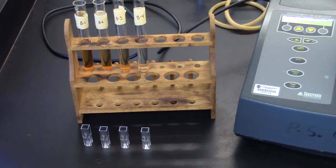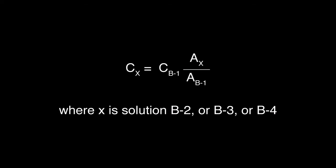Beer's law may be used to determine the concentration of the iron-thiocyanate complex at the equilibrium as follows. The concentration of X equals the concentration of B1 times the absorbance of X divided by the absorbance of B1, where X is solution B2 or B3 or B4.